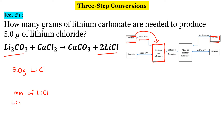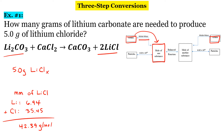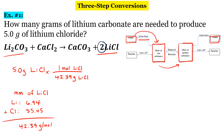Lithium is 6.94 and chlorine is 35.45, so add those together and you get 42.39 grams per mole. We're going to plug that in: 42.39 grams of lithium chloride for every one mole of lithium chloride. Step number two in our three-step problem is to use our mole ratio to go from lithium chloride to lithium carbonate.